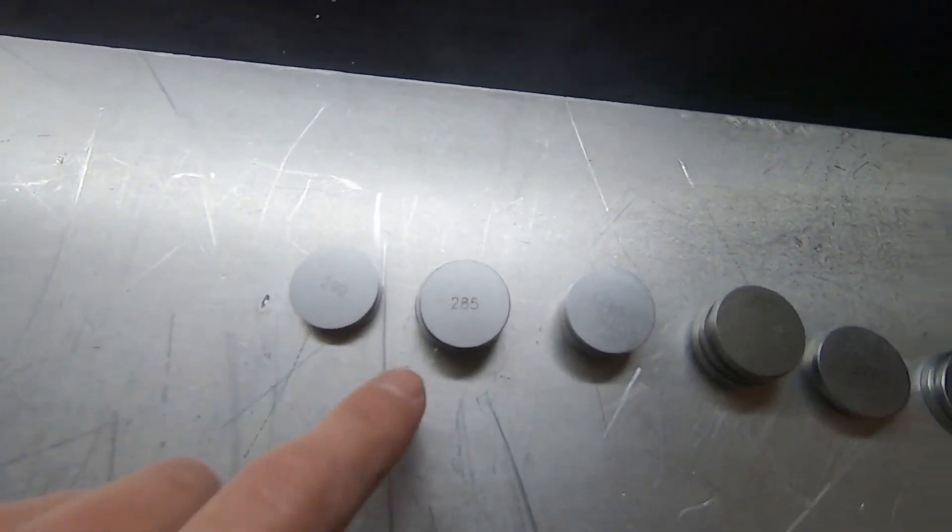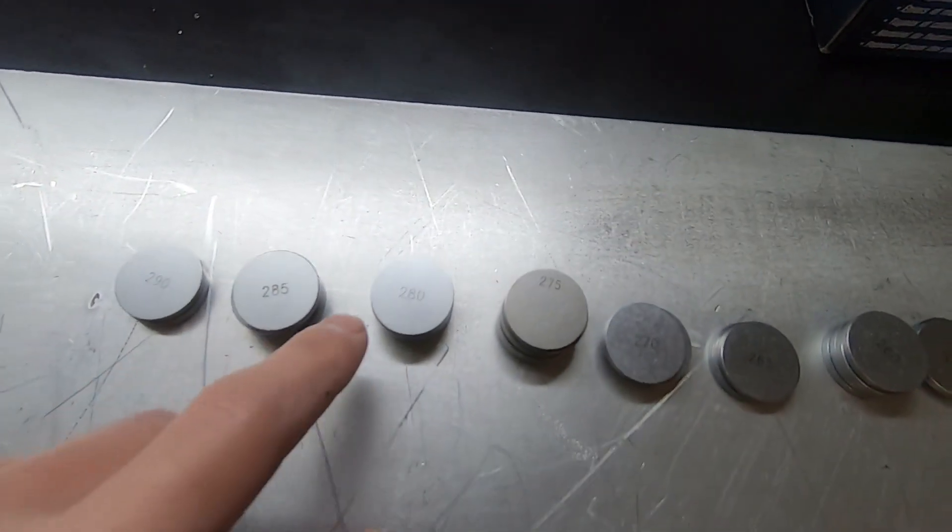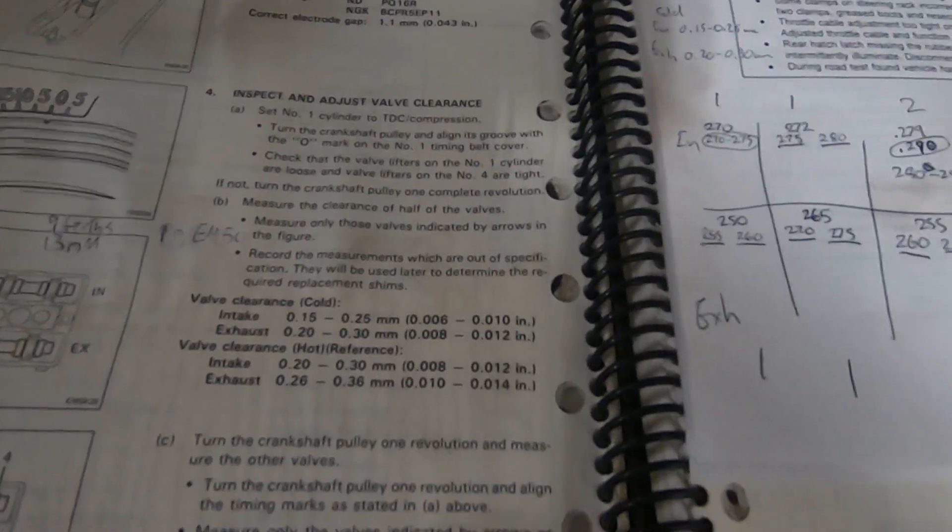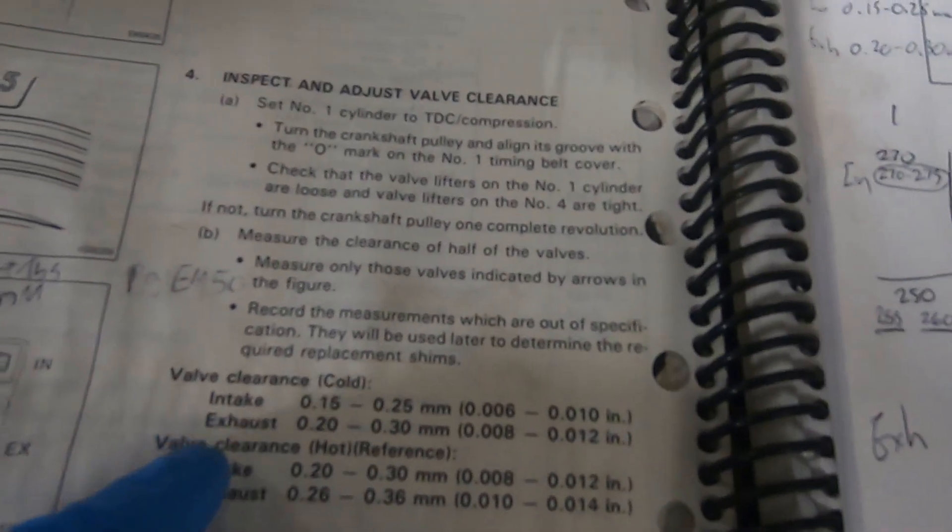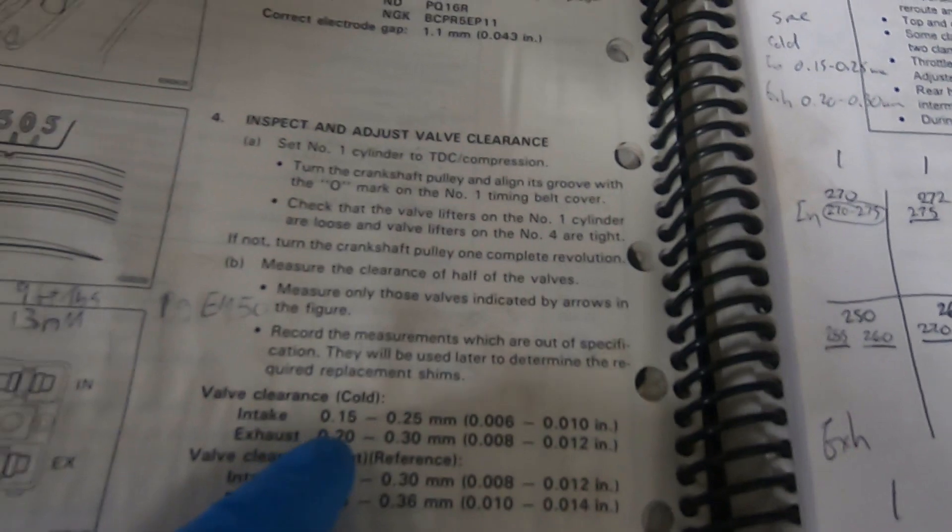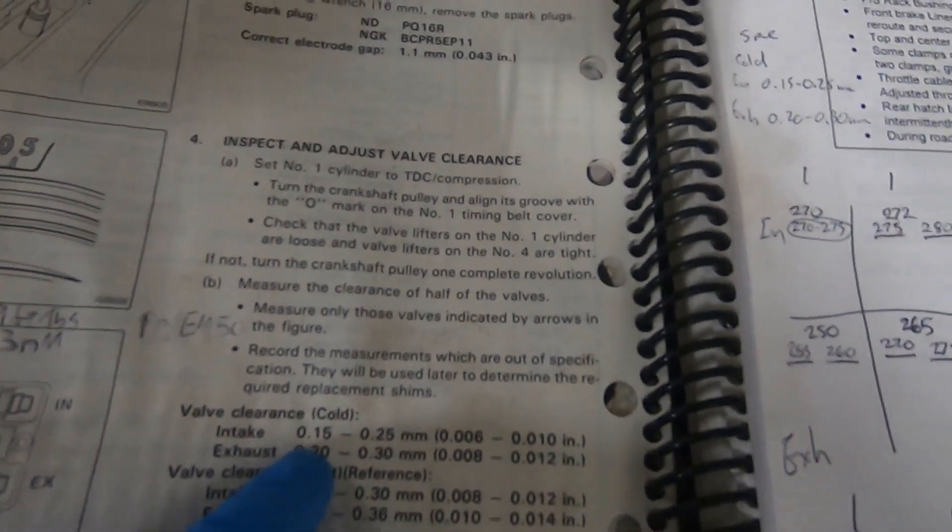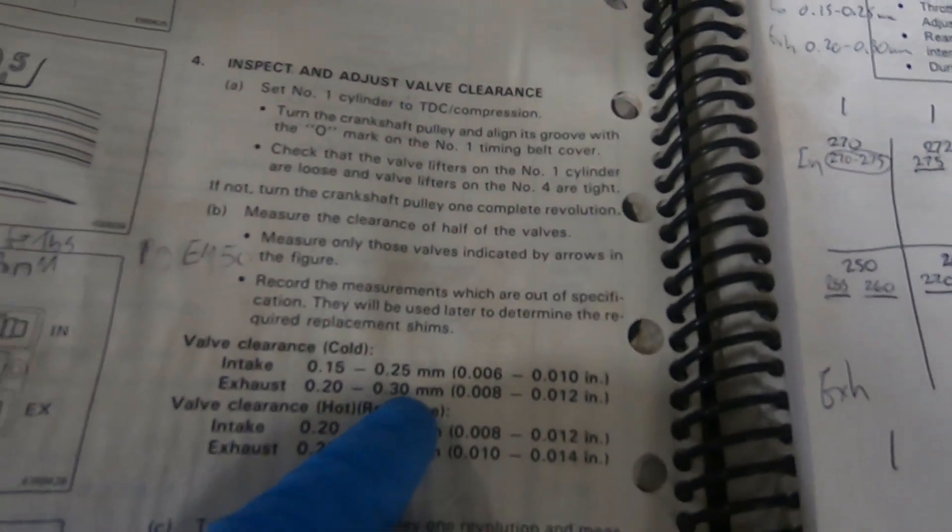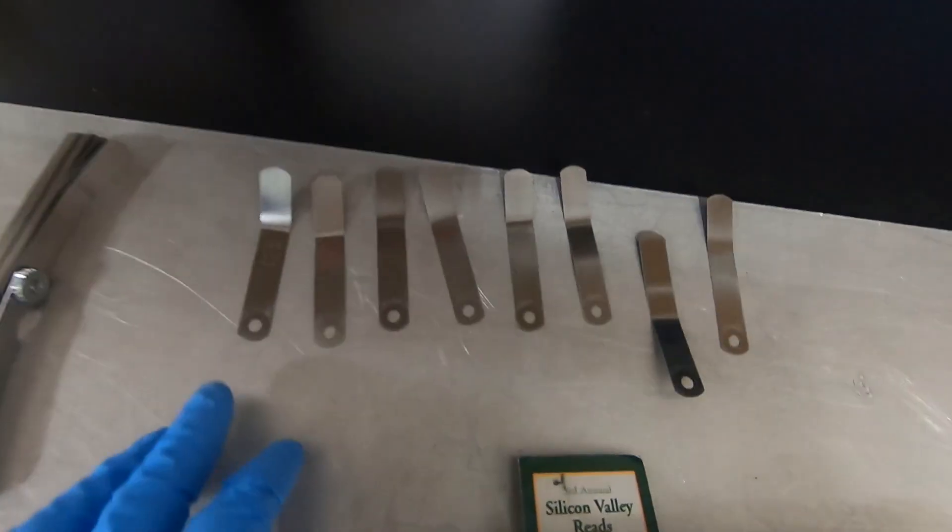Our valve clearance spec for the intake and exhaust—the minimum is going to be 0.15 mil all the way up to 0.30 mil. I have a set of feeler gauges from 0.15 all the way up to 0.330.